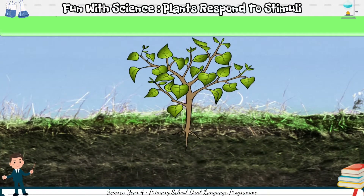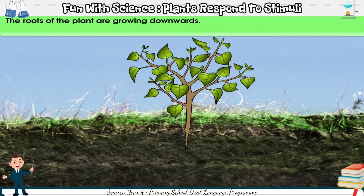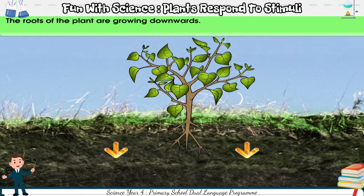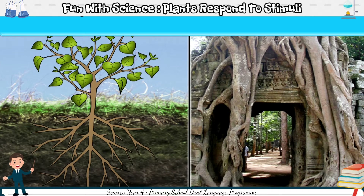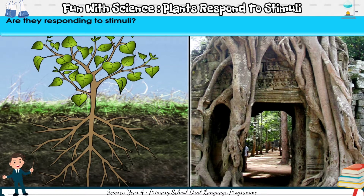Look at the plant. The roots of the plant are growing downwards. Why do the roots grow downwards? Are they responding to stimuli? Think about it.